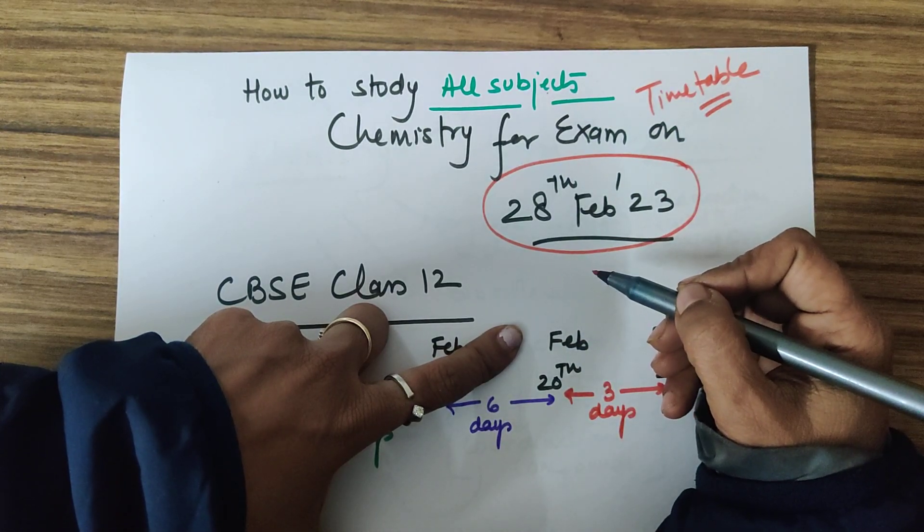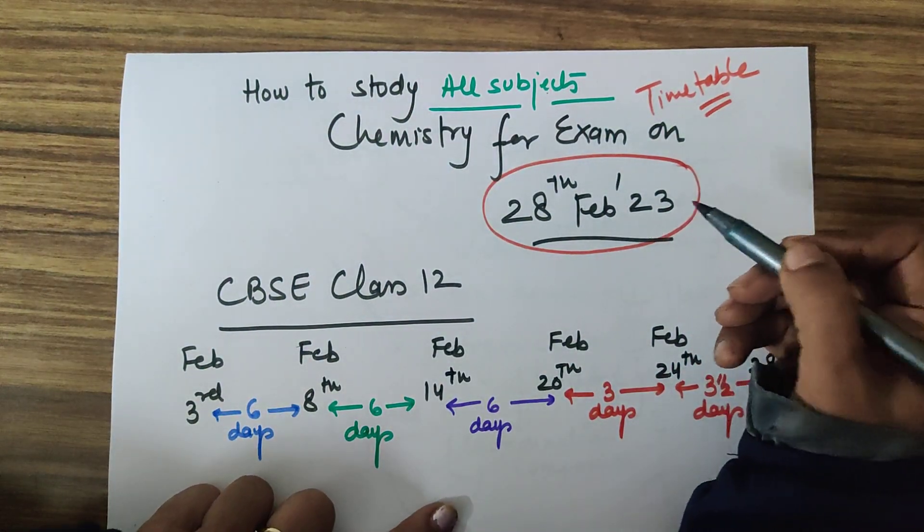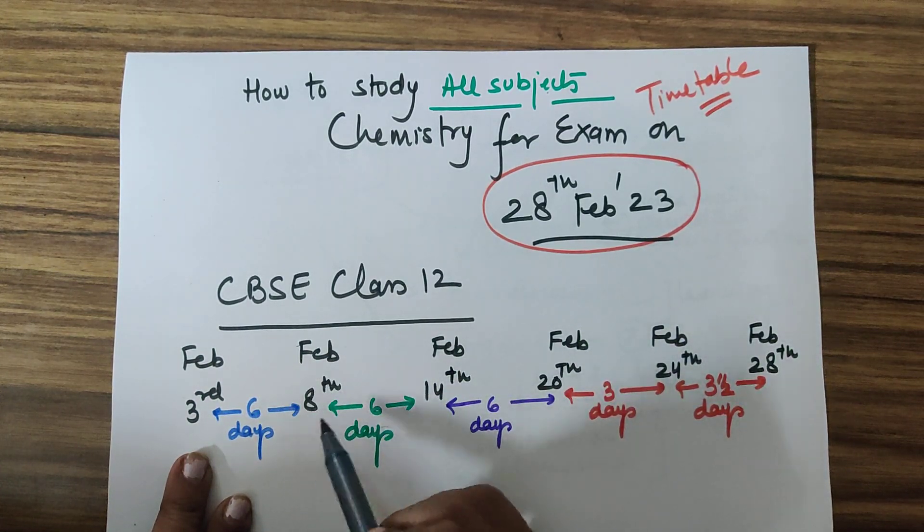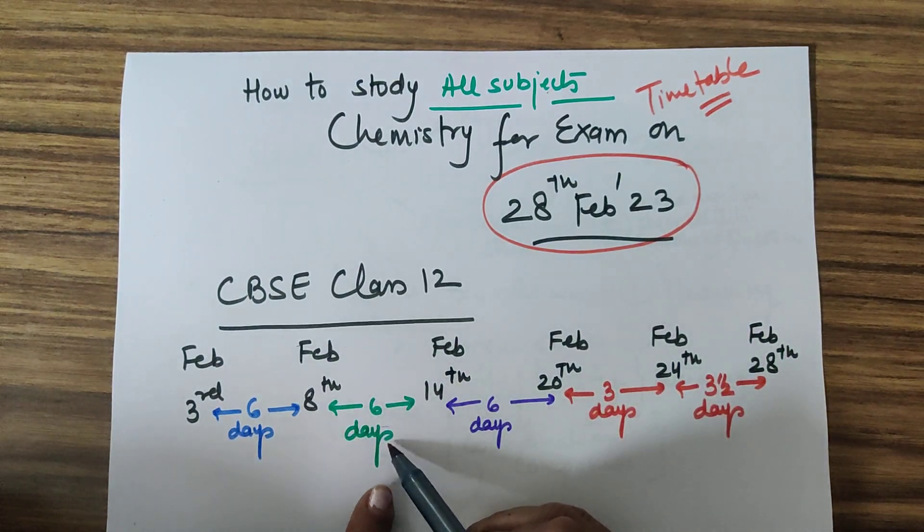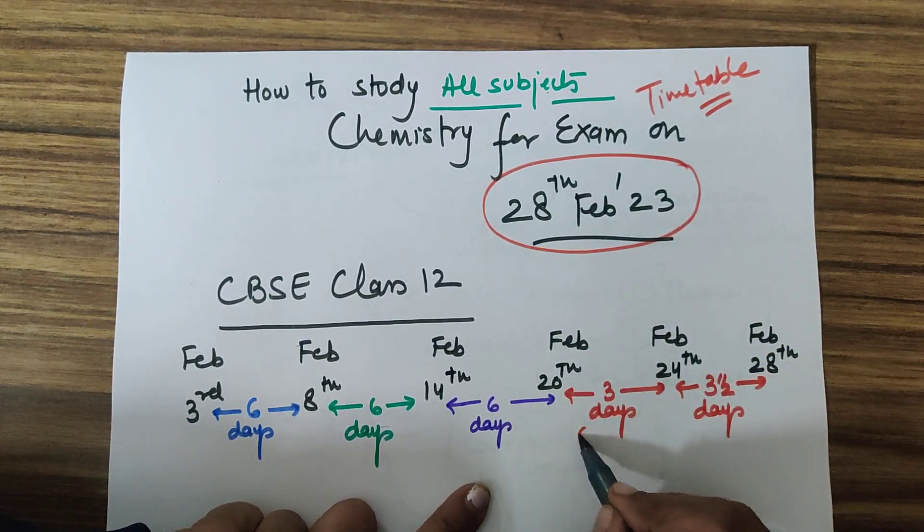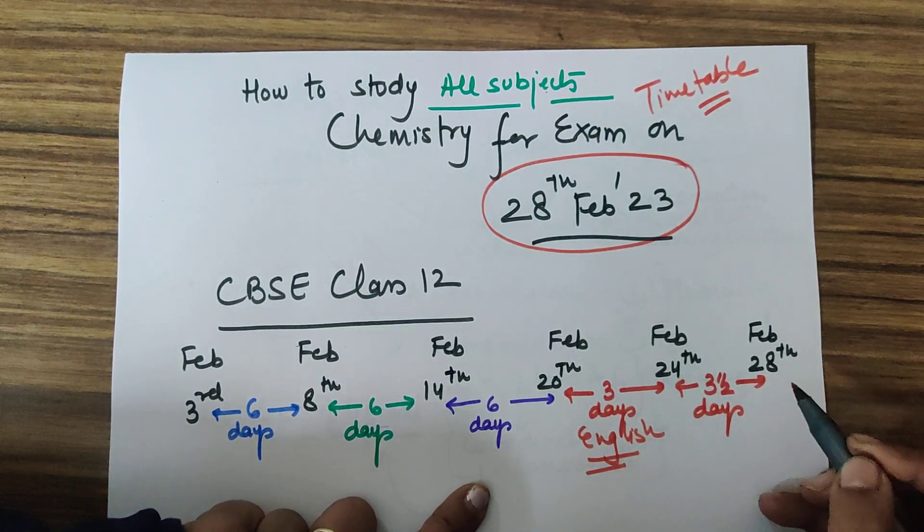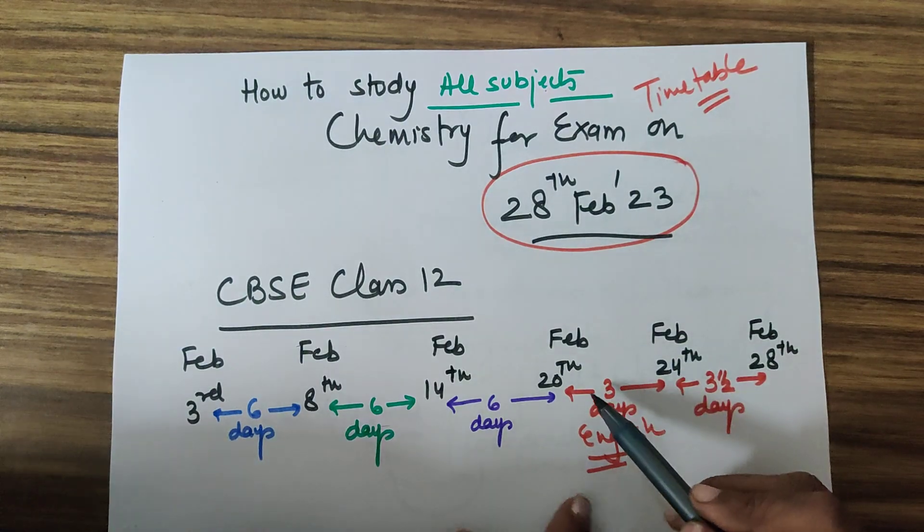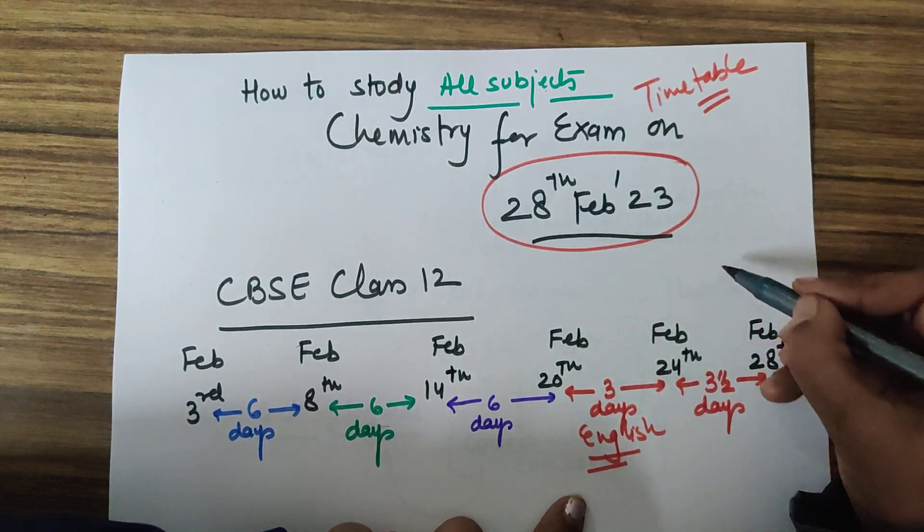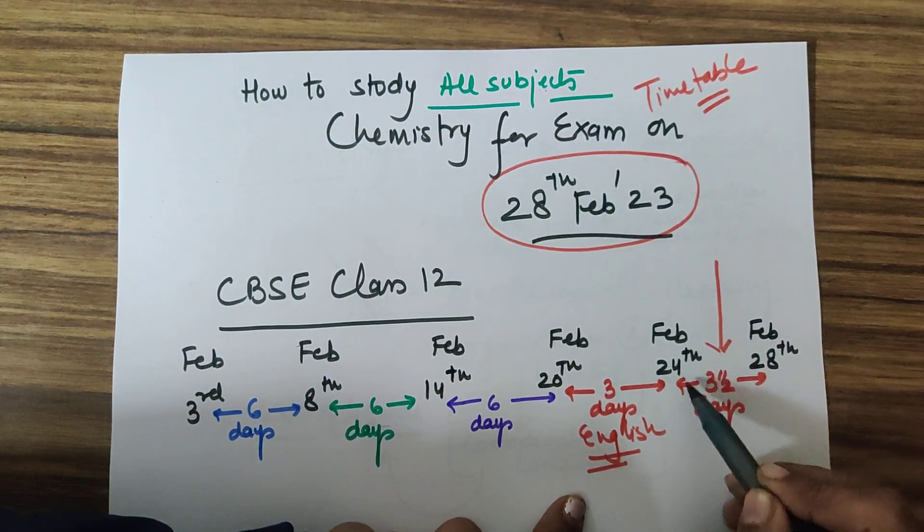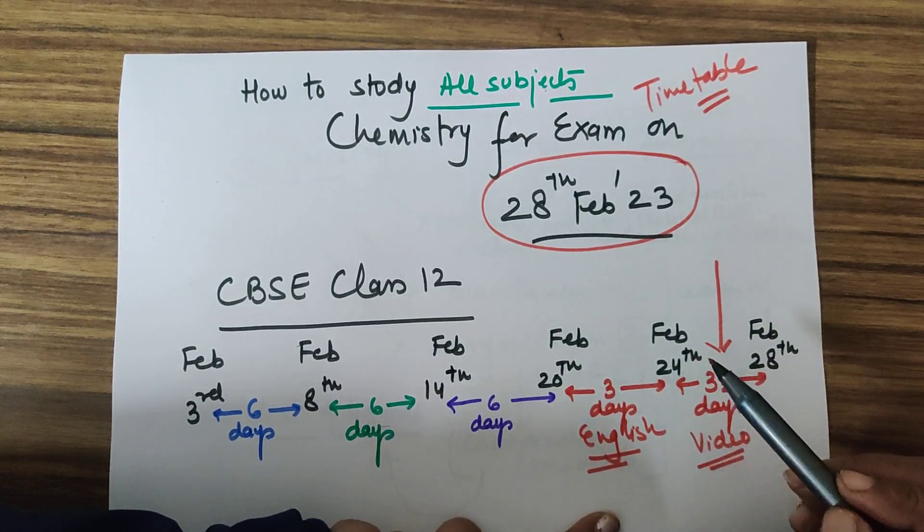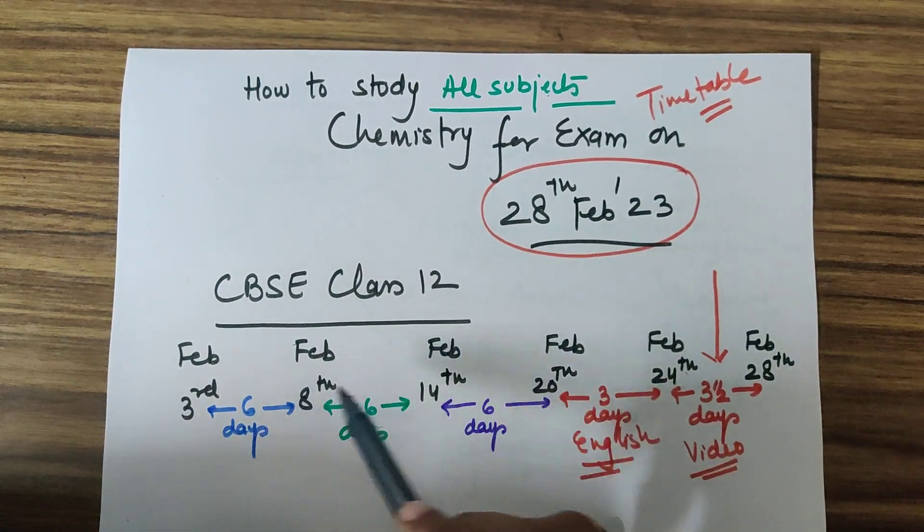I've divided this month into sets of six days from February 3rd to 8th, from February 9th to 14th, and the next six day set is 14th to 20th. Another six days from 20th to 24th. From the 24th, these three days are solely for English because you don't study English regularly, so these three days you have to devote to English. That is 21st, 22nd and 23rd. From the 24th to the 28th, which is three and a half days, this is how to handle chemistry in those three and a half days.